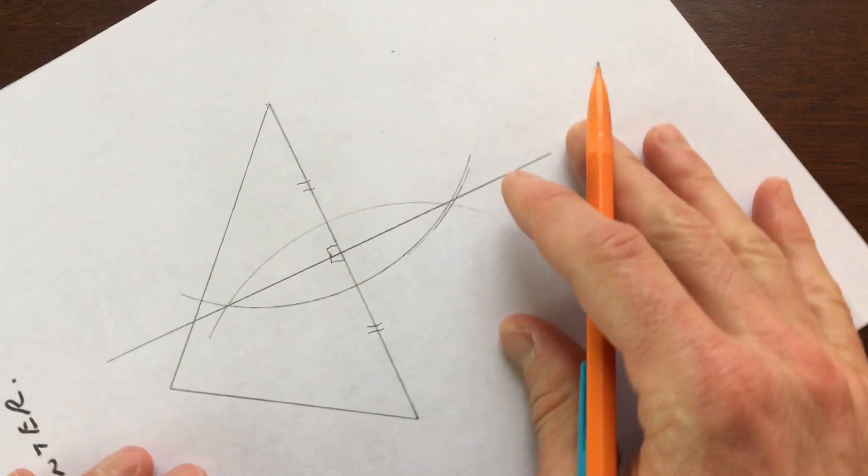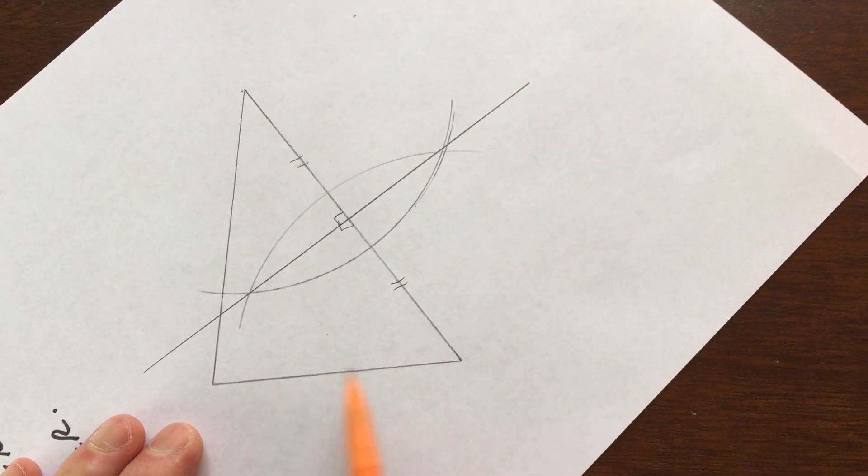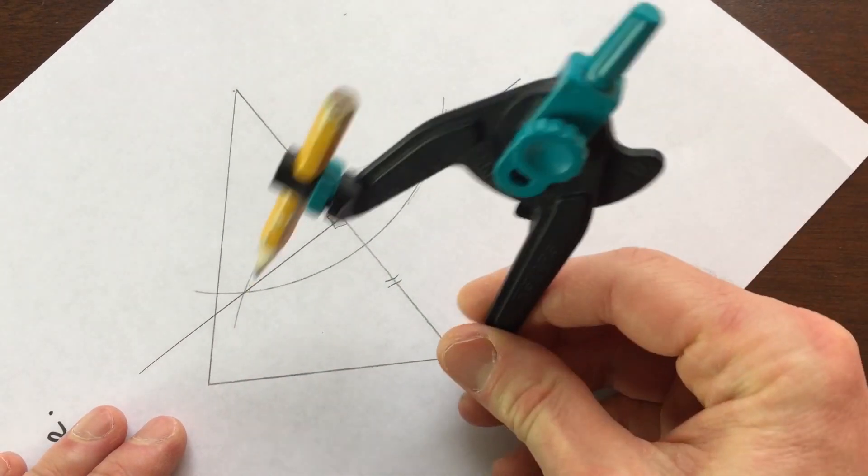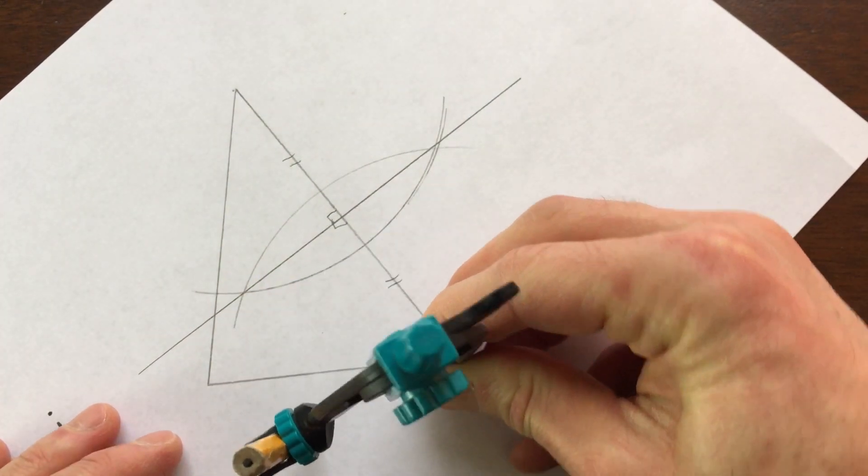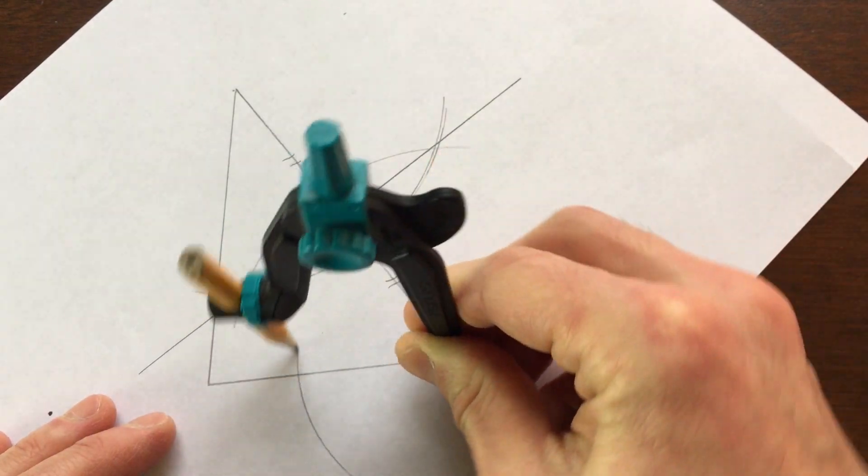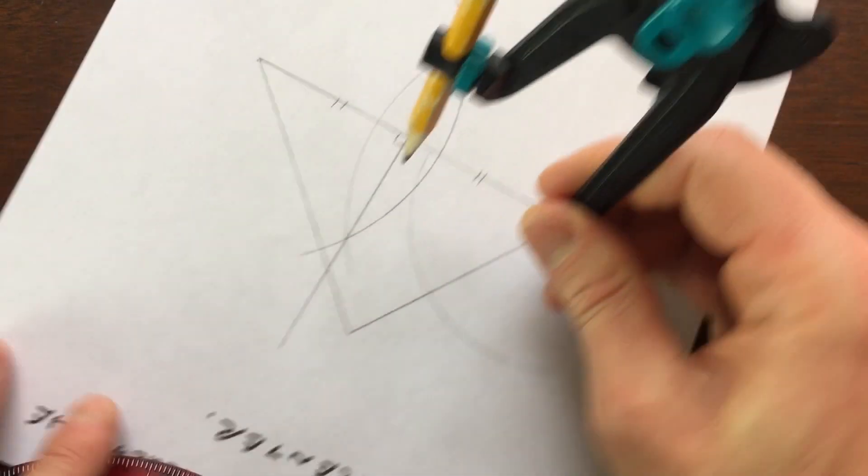Let's go ahead and rotate the triangle, and let's see if we can find the perpendicular bisector of this side now. So we're going to do the same process. Again, you want to make sure you open the compass a little bit more than halfway, half the length of the segment, and we're going to make an arc above and below that line segment.